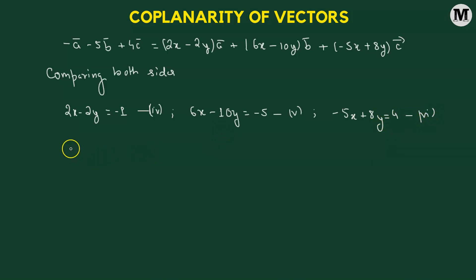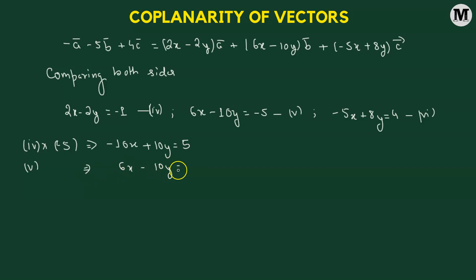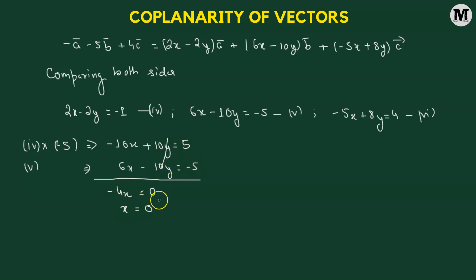We pick equations 4 and 5 to solve for x and y. Multiplying equation 4 by -5 gives -10x + 10y = 5. Adding this to equation 5 (6x - 10y = -5) gives -4x = 0, so x = 0.